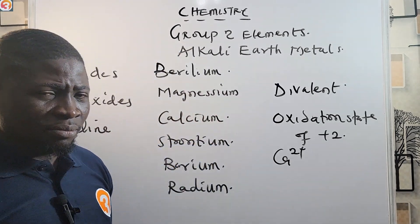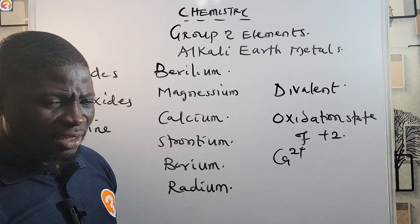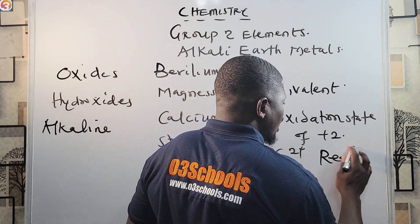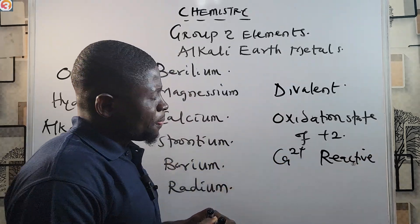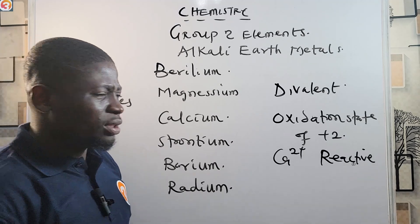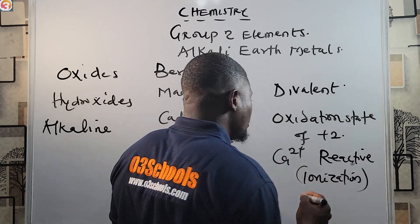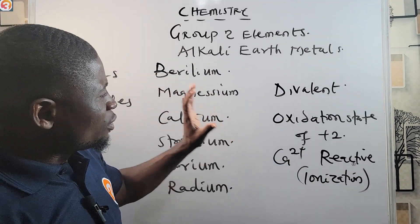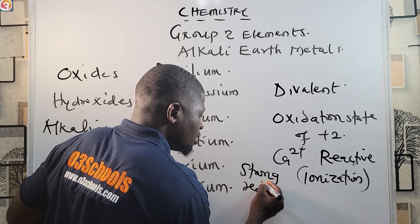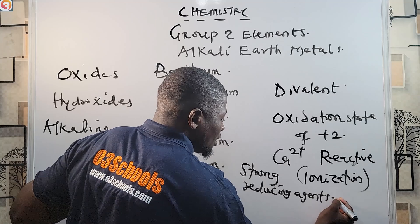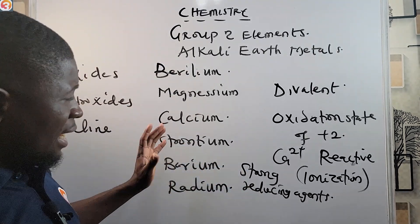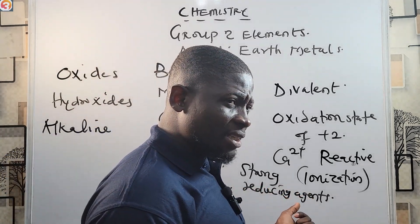Group two elements are also very reactive and are good reducing agents, due to the ease of loss of their outermost electrons. Just like group one elements, they are reactive and can easily ionize due to the ease of loss of their valence electrons. They are strong reducing agents.